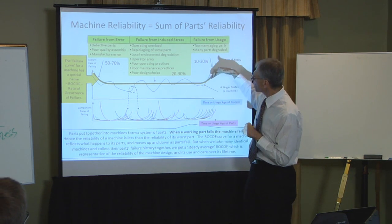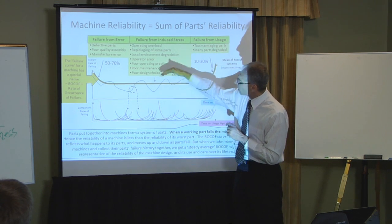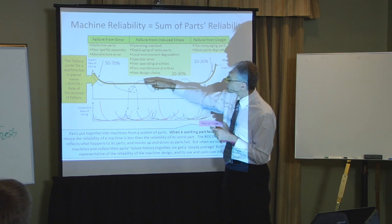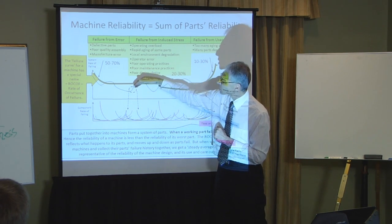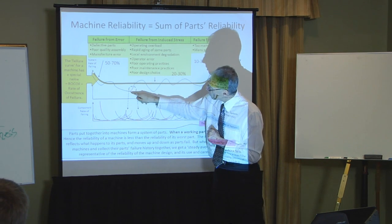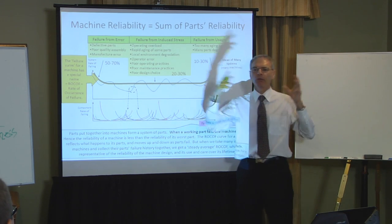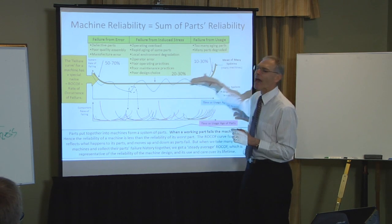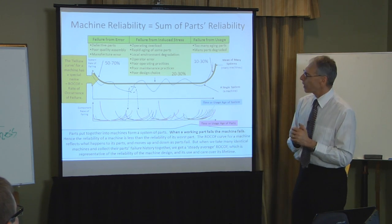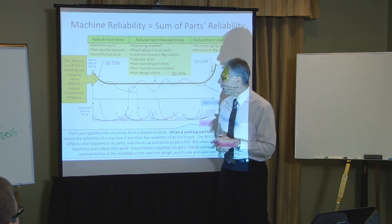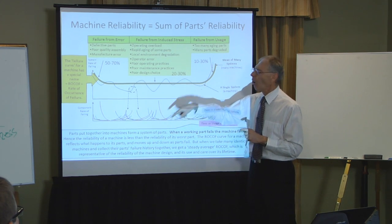The challenge now is to prevent that. This main curve is called the rate of occurrence of failure — it's the curve for a machine. A single machine fails when its parts fail, and as each part fails the machine failure rate increases. When I get many of the same machines together — maybe a thousand of them — we get an average figure. The thick curve is the average for many machines of the same model. If I can prevent the parts from failing, this curve comes lower and lower because that curve is the result after the parts break.